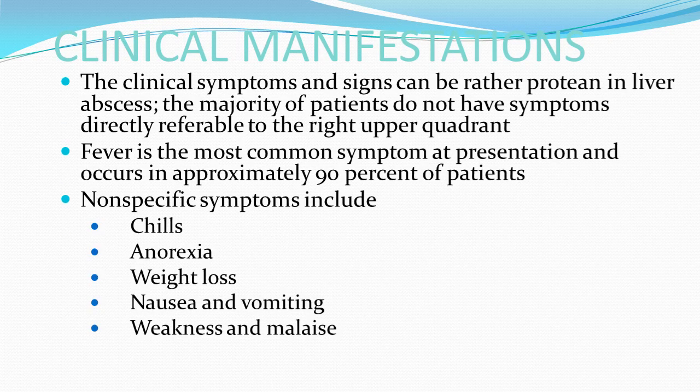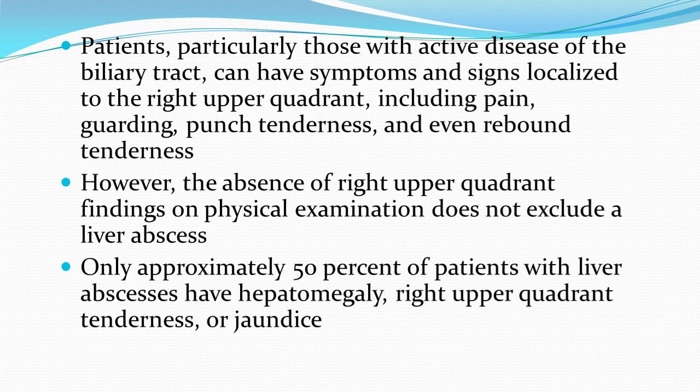Clinical manifestations of liver abscess can be quite variable. The majority of patients do not have symptoms directly referable to the right upper quadrant. Fever is the most common presenting symptom, occurring in approximately 90% of patients. Non-specific symptoms include chills, anorexia, weight loss, nausea, vomiting, weakness, and malaise. Patients with active biliary tract disease may have right upper quadrant pain, guarding, punch tenderness, and rebound tenderness. However, the absence of right upper quadrant findings does not exclude liver abscess; only about 50% of patients have hepatomegaly, right upper quadrant tenderness, or jaundice.